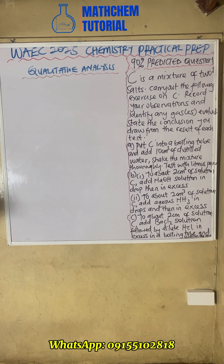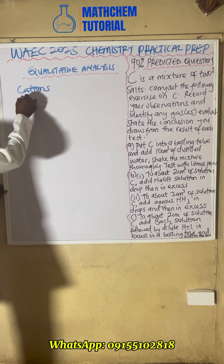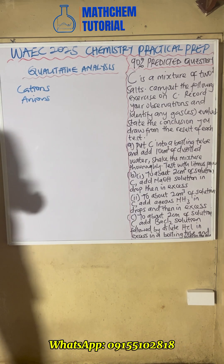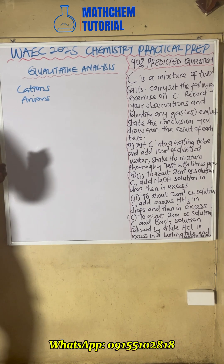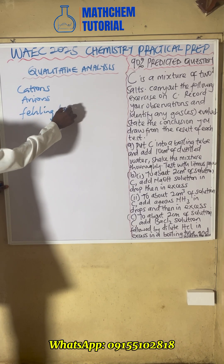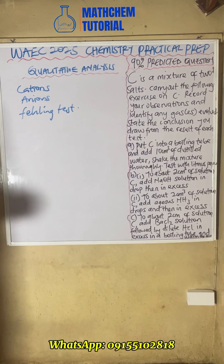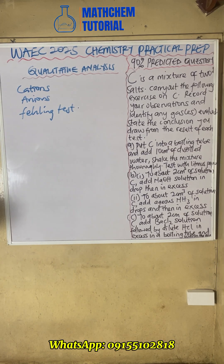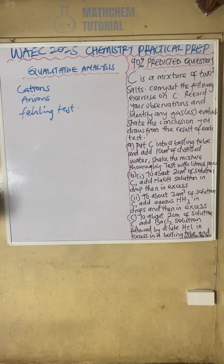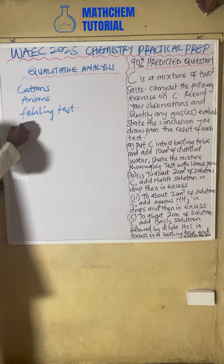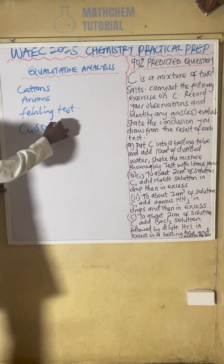For specimen C, you have to identify cations, identify anions, and perform a Fehling's test. Those are the three things we'll be doing in this qualitative analysis chemistry practical for WAEC 2025. The specimen they will give you for qualitative analysis is a mixture of two solid samples — that is copper sulfate, CuSO₄, mixed with glucose.